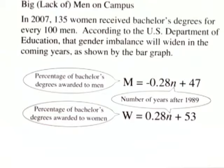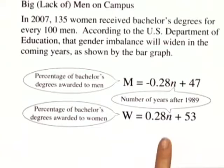Before we look at the bar graph, let's look at the formulas given. M represents the percentage of bachelor's degrees awarded to men, and it's given by negative 0.28N plus 47. Whereas W represents the percentage of bachelor's degrees awarded to women, and it's given by 0.28N plus 53. N represents the number of years after 1989.